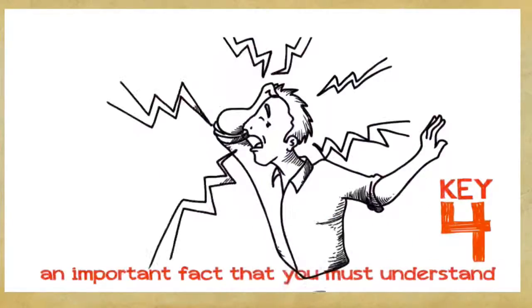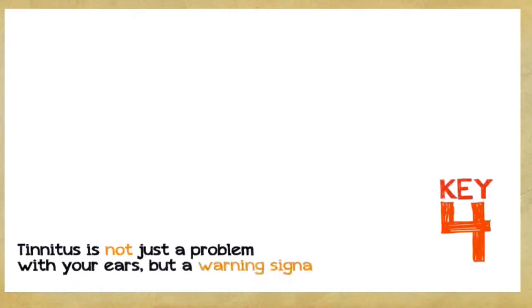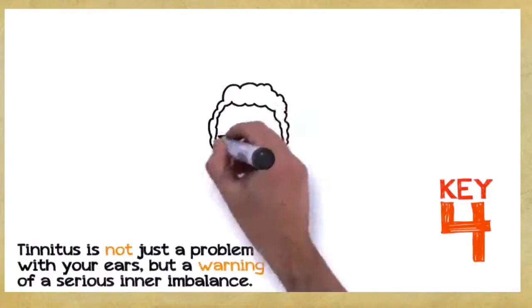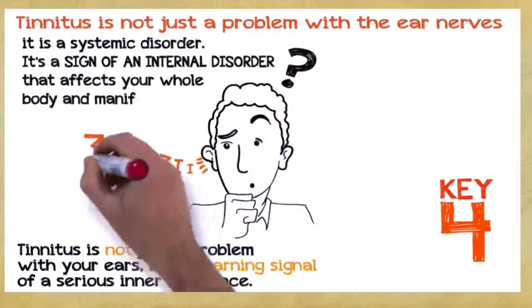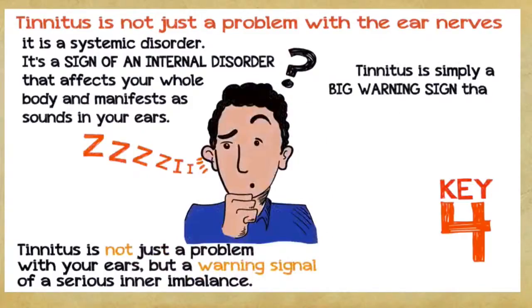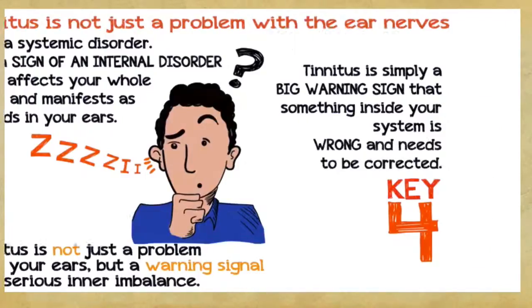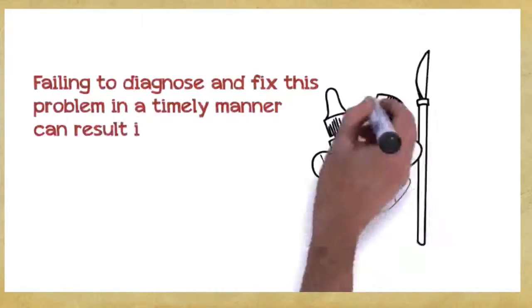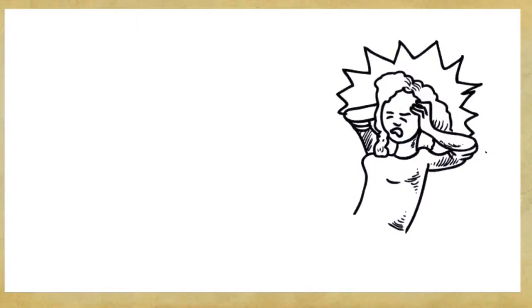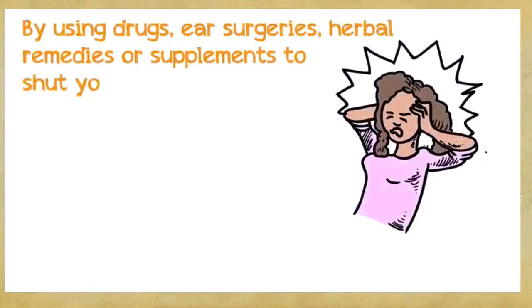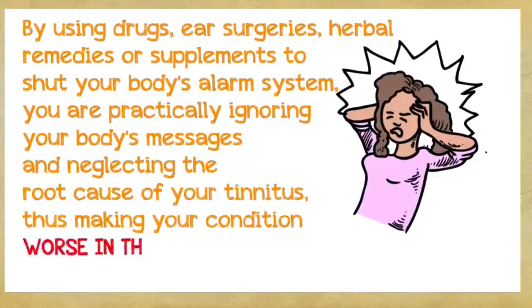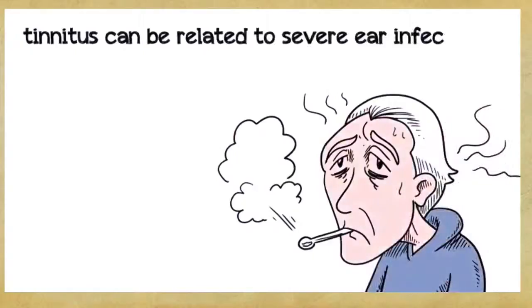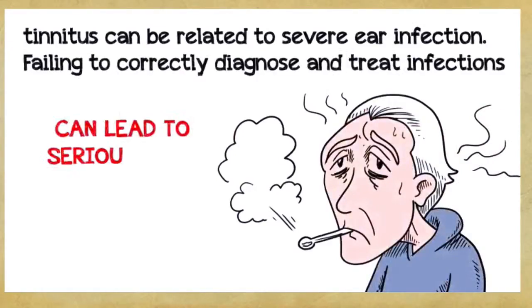Key number four. Tinnitus is not just a problem with your ears, but a warning signal of a serious inner imbalance. In the vast majority of cases, tinnitus is not just a problem with the ear nerves, it's a systemic disorder. It's a sign of an internal disorder that affects your whole body and manifests as sounds in your ears. Tinnitus is simply a big warning sign that something inside your system is wrong and needs to be corrected. Failing to diagnose and fix this problem in a timely manner can result in a far more severe and chronic disorder. By using drugs, ear surgeries, herbal remedies, or supplements to shut your body's alarm system, you're practically ignoring your body's messages and neglecting the root cause of your tinnitus, thus making your condition worse in the long run.